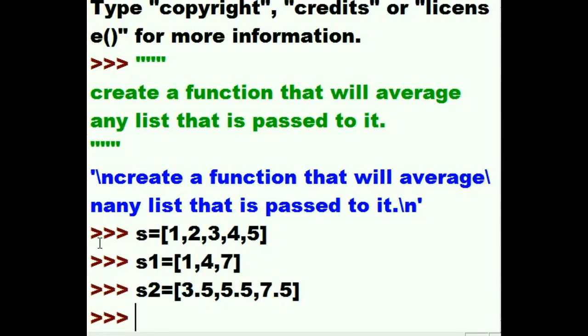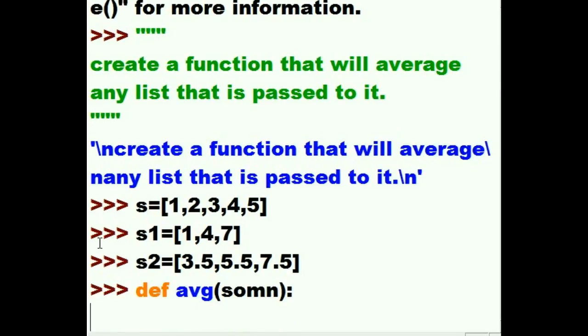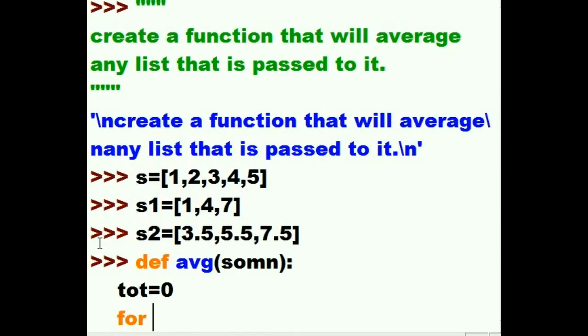The next thing I want to do is define my function, so I start off with def, d, e, f for define, and I'll call this a, v, g, and I'm going to take whatever is passed to this function and put it into a variable called something, then a colon. Now total equals 0, for q in something, colon.